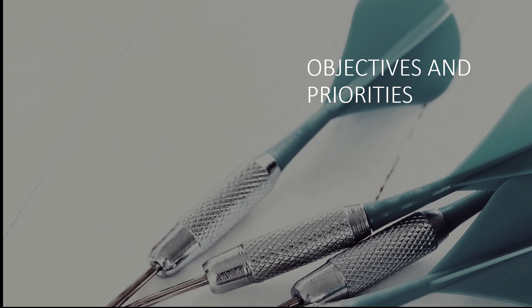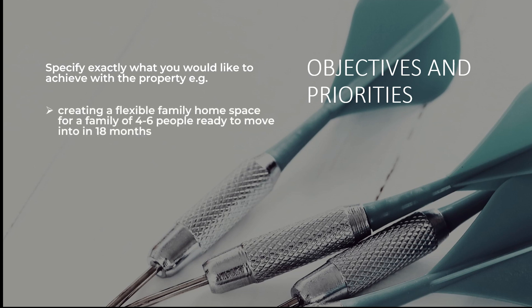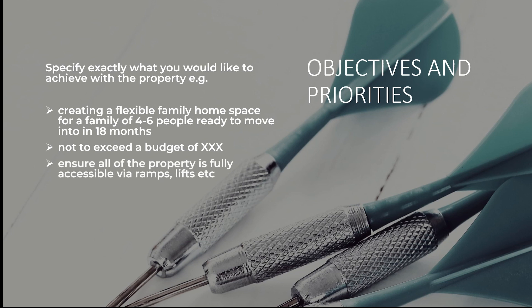In objectives and priorities, it is helpful to bullet point list exactly what you would like to achieve with the property. For example: creating a flexible family home space for a family of four to six people, ready to move into within the next 18 months; not exceeding a budget of a certain sum; ensuring all of the property is fully accessible via ramps and lifts; and if sustainability is important to you, potentially adding an objective around achieving certain government energy targets.